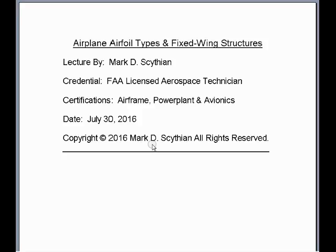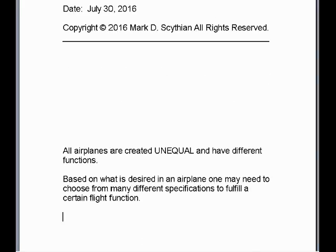In this video lecture we are going to discuss airplane airfoil types and fixed wing structures, i.e. airplane aerodynamic structures, including wings and stabilizers. All airplanes are created unequal and have different functions. Based on what is desired in an airplane, one may need to choose from many different specifications to fulfill a certain flight function.